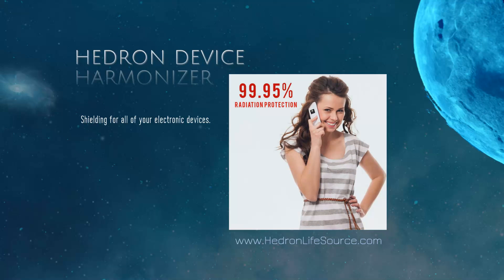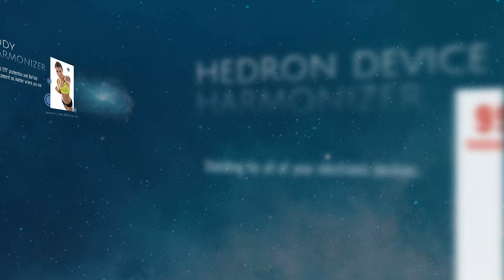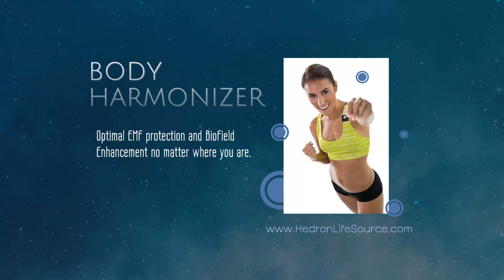We also carry the Hedron Body Harmonizer. So what this is, this has the key mineral of shungite in it, which is basically for biofield protection. It's like antioxidant for your biofield. It has everything the cell phone harmonizer has in it, but with the added shungite. This just definitely gives the body an extra boost.